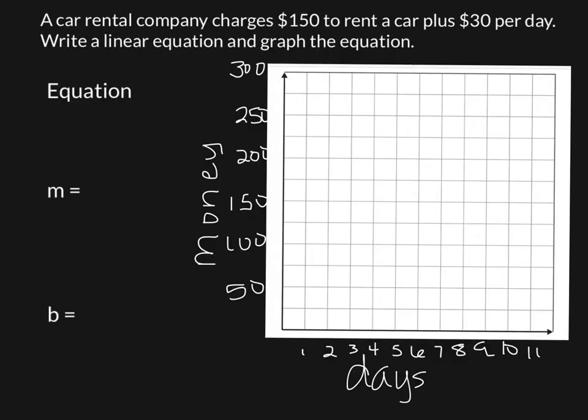Next one's a word problem. I know it's a lot. I didn't fill this out on your notes. Go ahead and fill the numbers out on your video. So a car rental company charges $150 to rent a car, plus $30 per day. Write a linear equation and graph the equation. So we've talked about this before. We've talked about constants, and then we've talked about numbers that are going to be attached to a variable. So the $150 is what they will pay no matter how many days they have the car. It's a $150 flat fee. So remember, that is our constant.